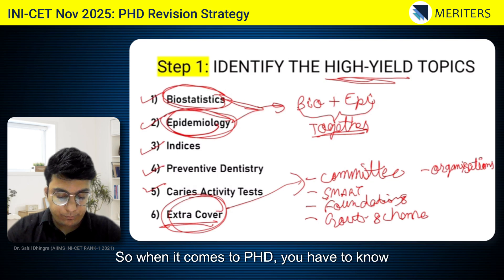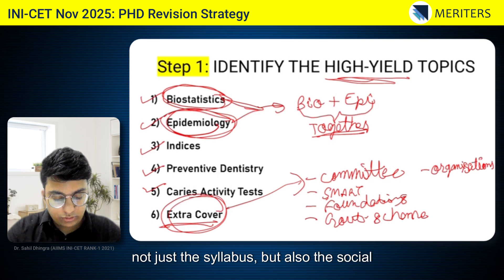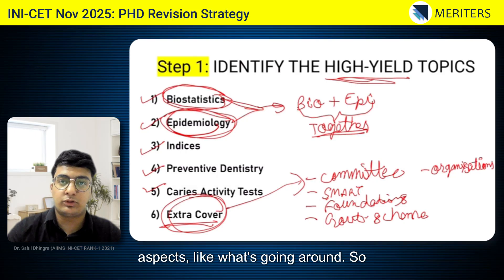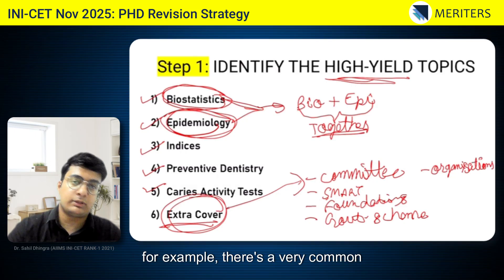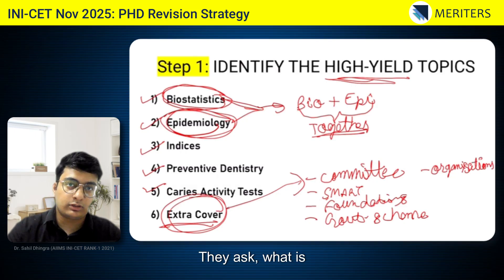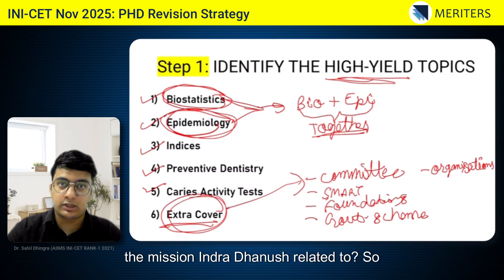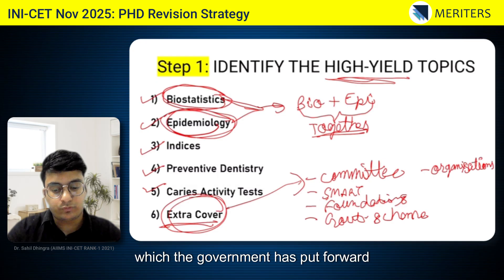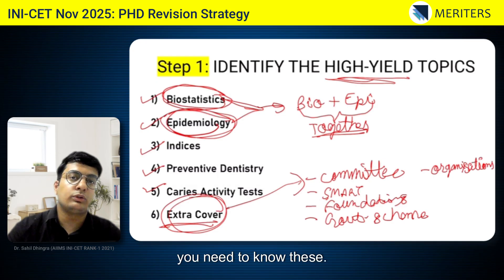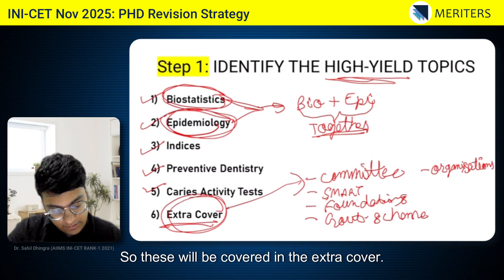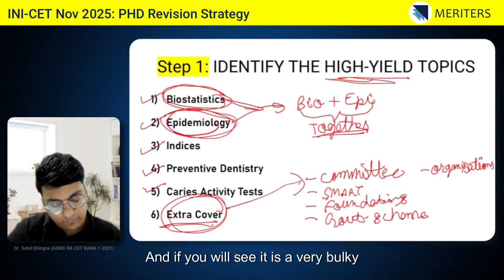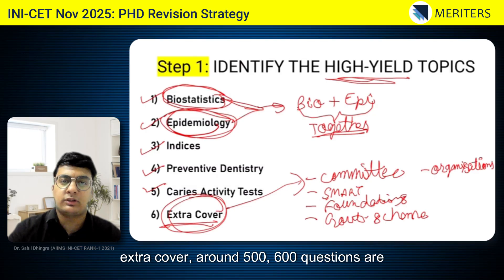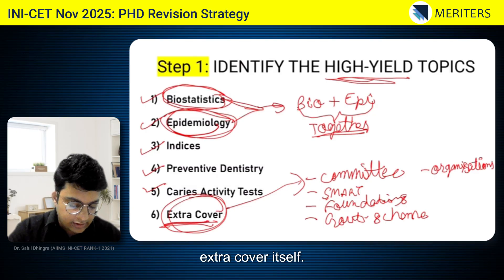When it comes to PhD, you have to know not just the syllabus but also the social aspects — what's going on around you. For example, they commonly ask questions like what a particular mission or resolution is related to — central government schemes you need to know. The extra cover is very bulky; around 500 to 600 questions are there in this section alone.